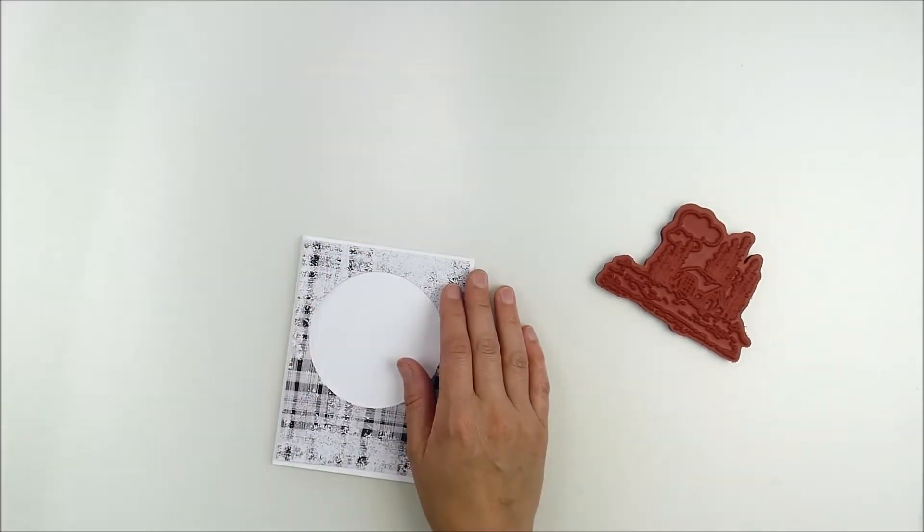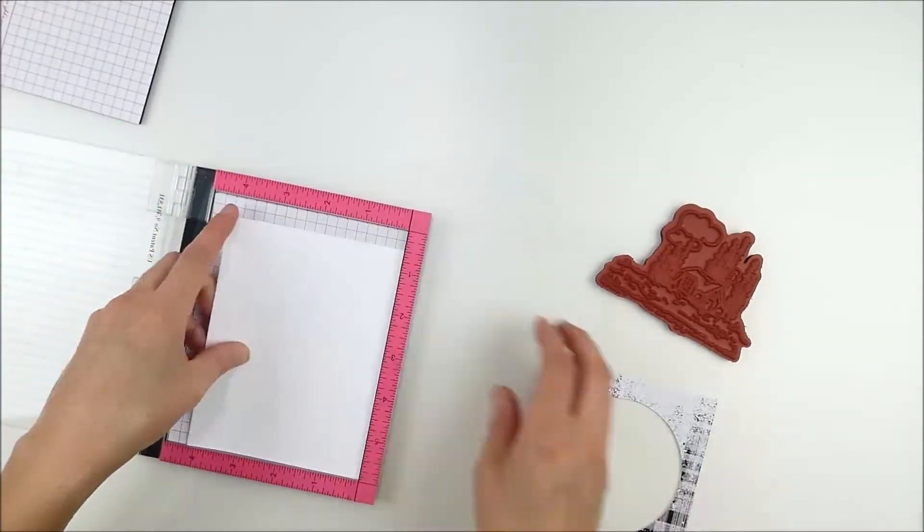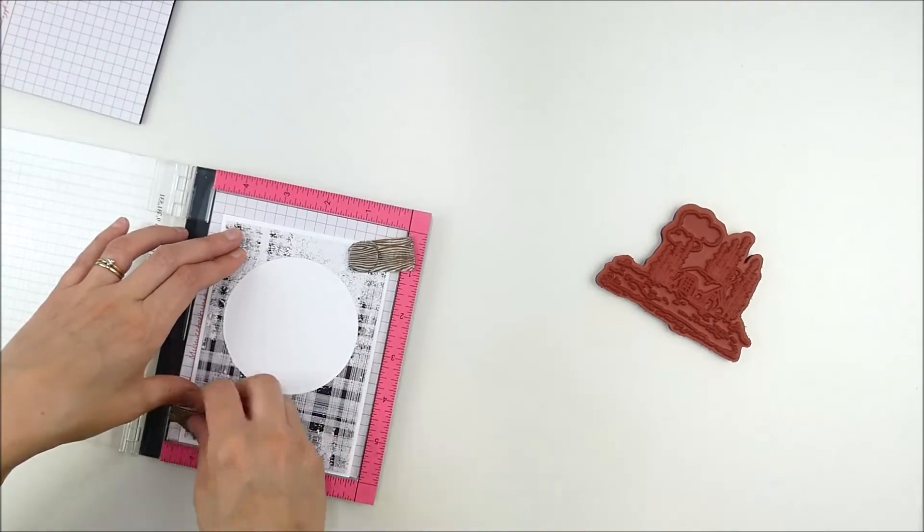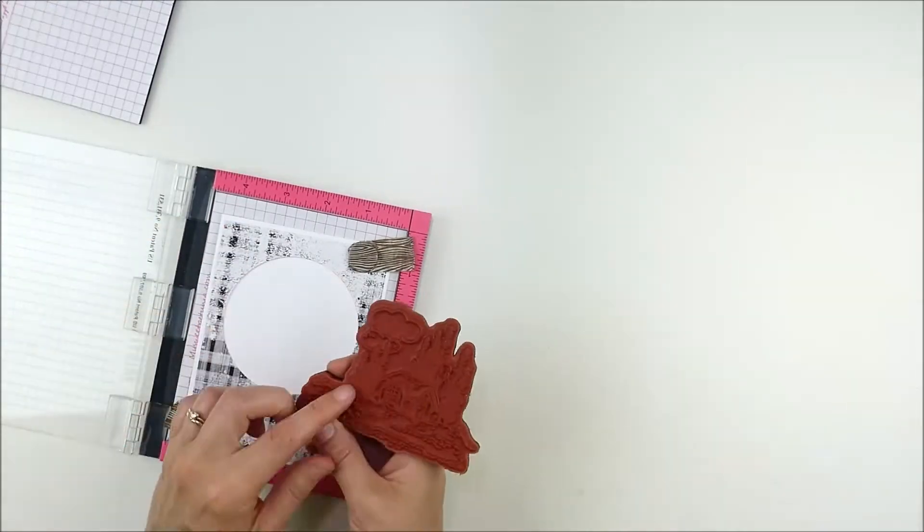As you can see, it's already trimmed down to the size of an A2 card and I'm going to go ahead and use my Misti to stamp that image so that it lines up in the center of my circle.